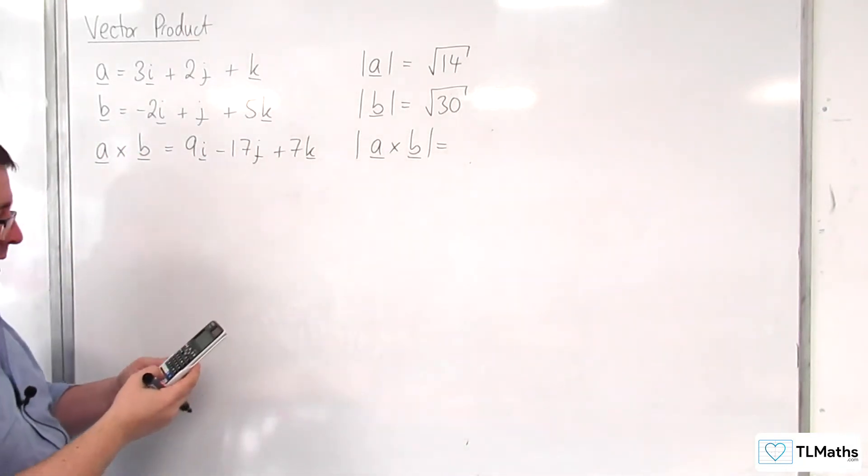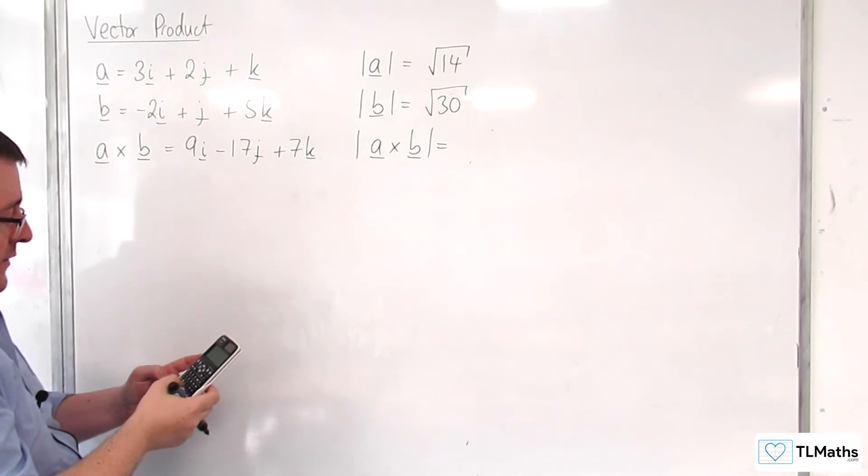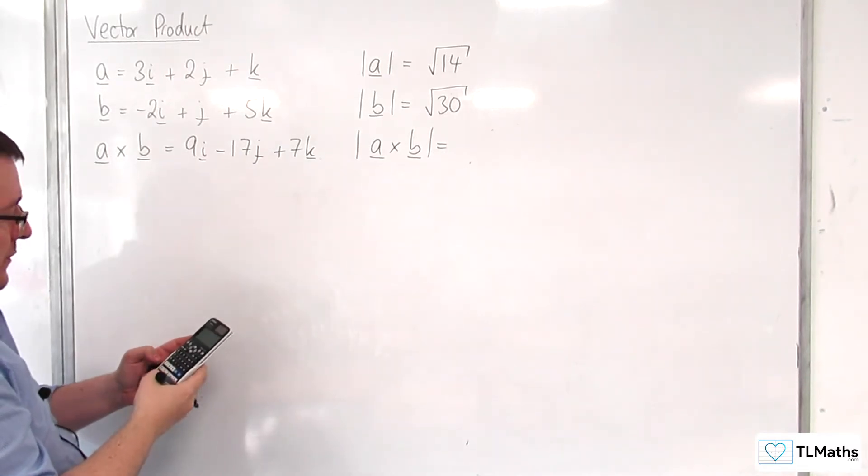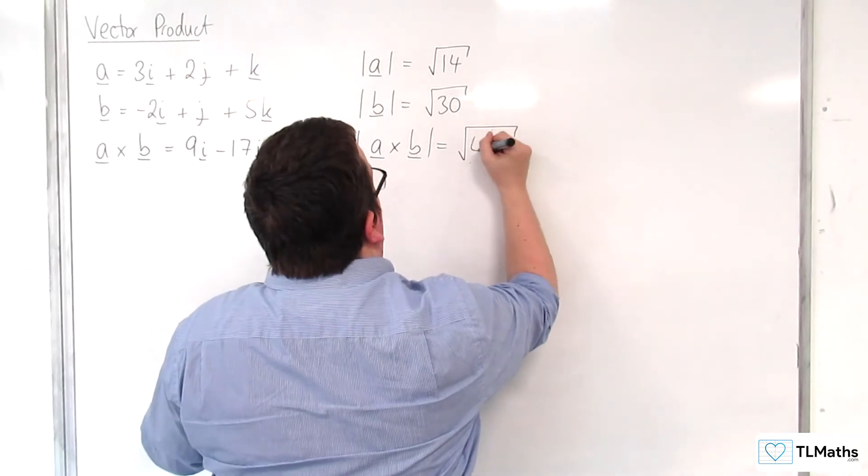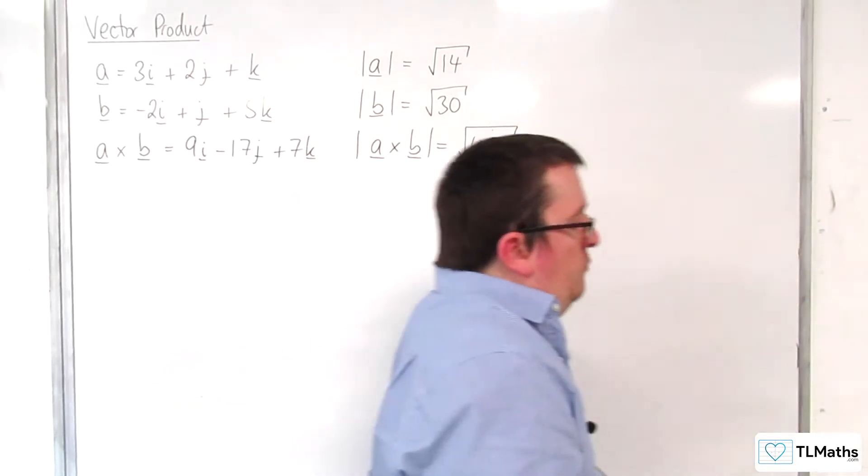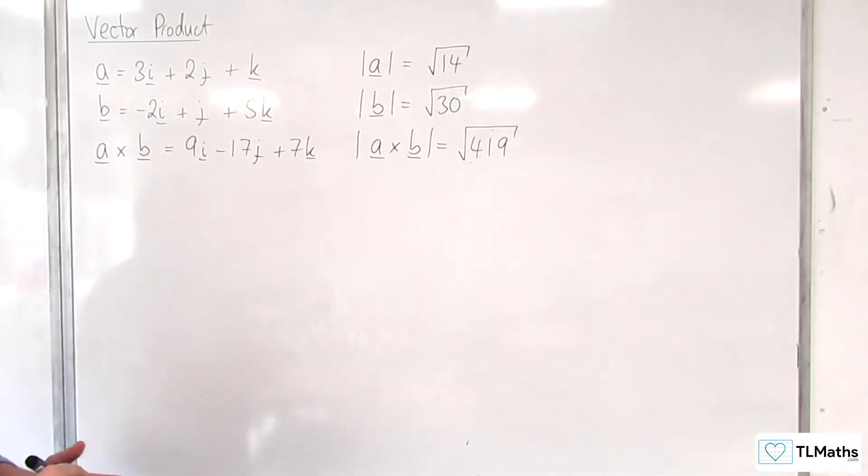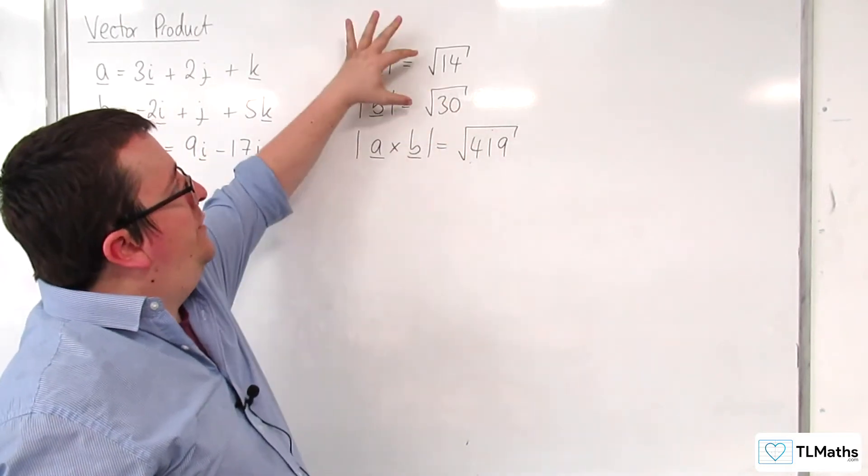And the length of A cross B is the square root of 9 squared plus negative 17 squared plus 7 squared. And that gets us the square root of 419. So really, it would be interesting to see how this relates to these.